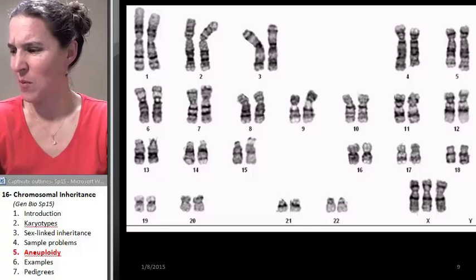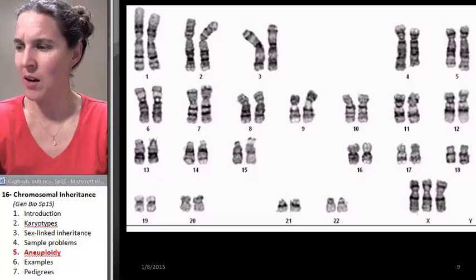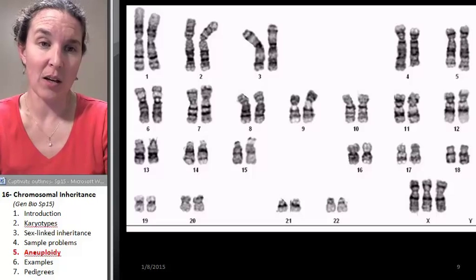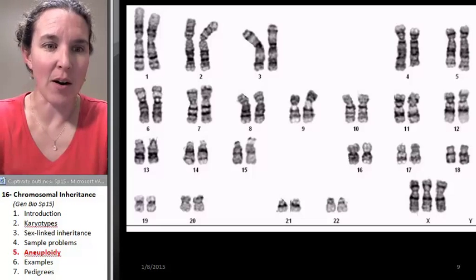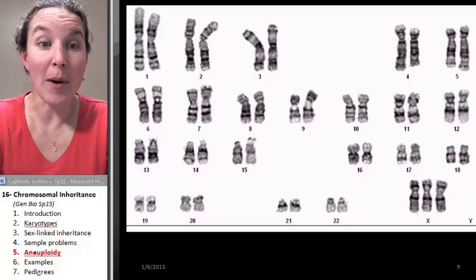All right. We're going to look at more examples of aneuploidy. I thought I already looked at examples of aneuploidy. I'm skipping the examples of aneuploidy because I think I just did that part. And now, we're going to talk about pedigrees.